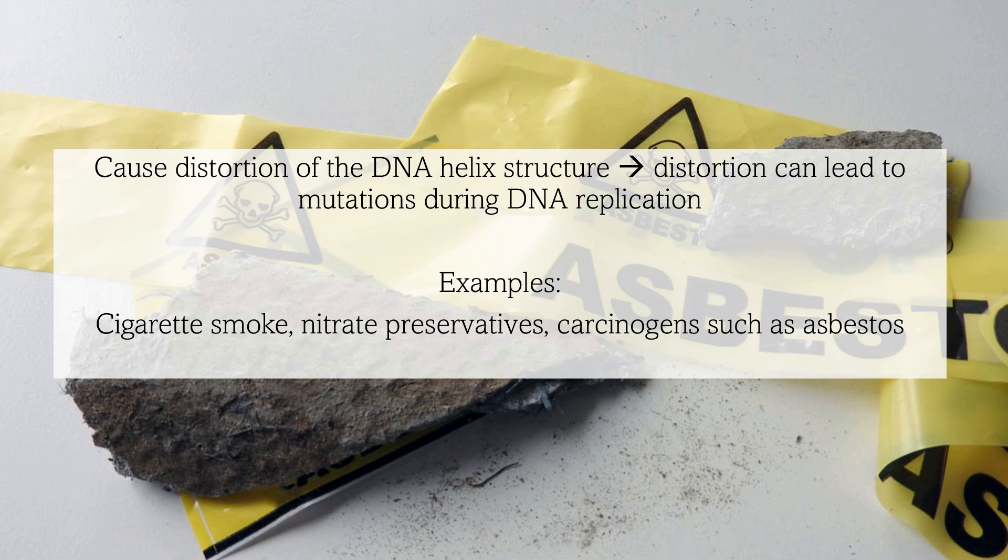Chemical mutagens can insert themselves into DNA sequences, causing the DNA double helix to become distorted. During DNA replication, this distortion can lead to the wrong base being paired with its complementary base, or the chemical substance being mistaken for a base and incorporated into the DNA strand. Such changes in DNA can alter the function of proteins, impairing cellular processes.